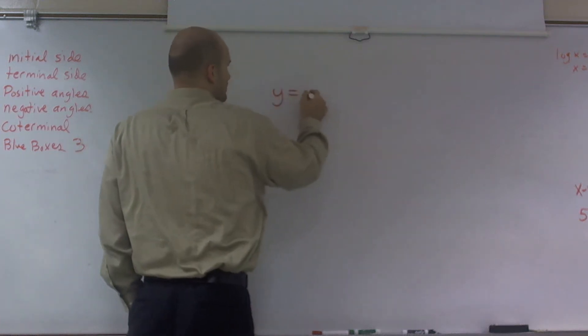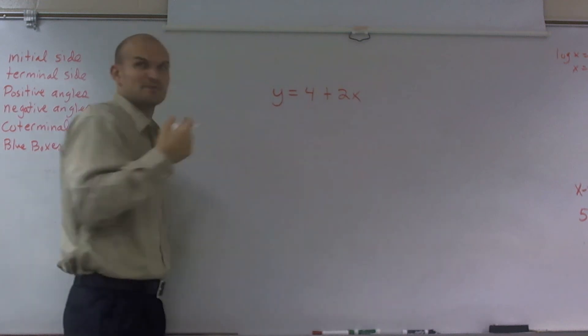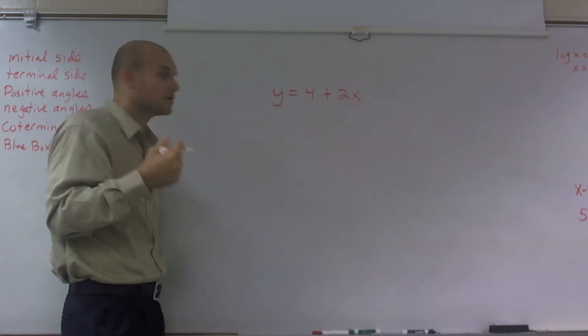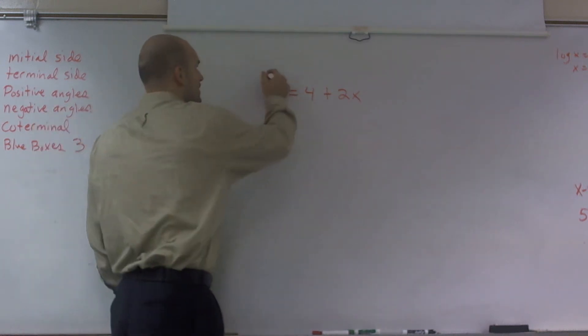Alright, so it says y equals 4 plus 2x, right? Or is it 2x plus 4? It's 4 plus 2x. So what they want us to do for this problem is they want us to find the x and the y-intercepts.